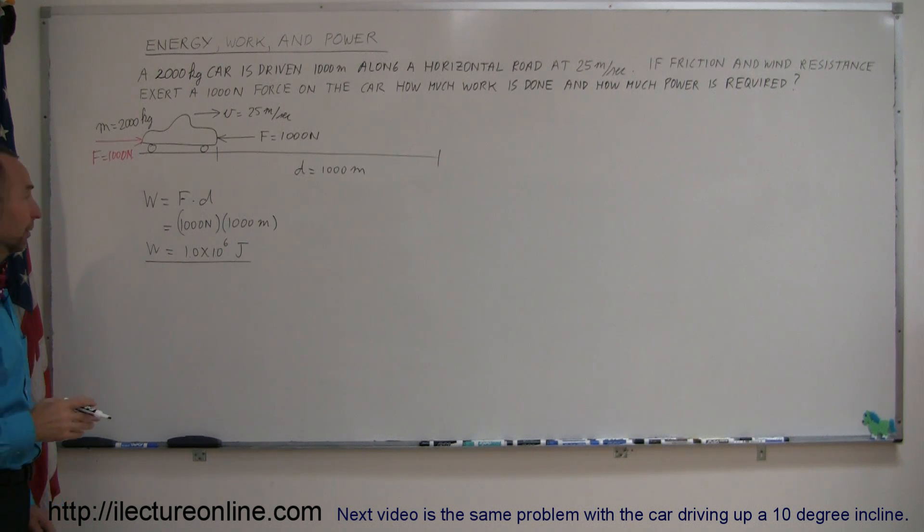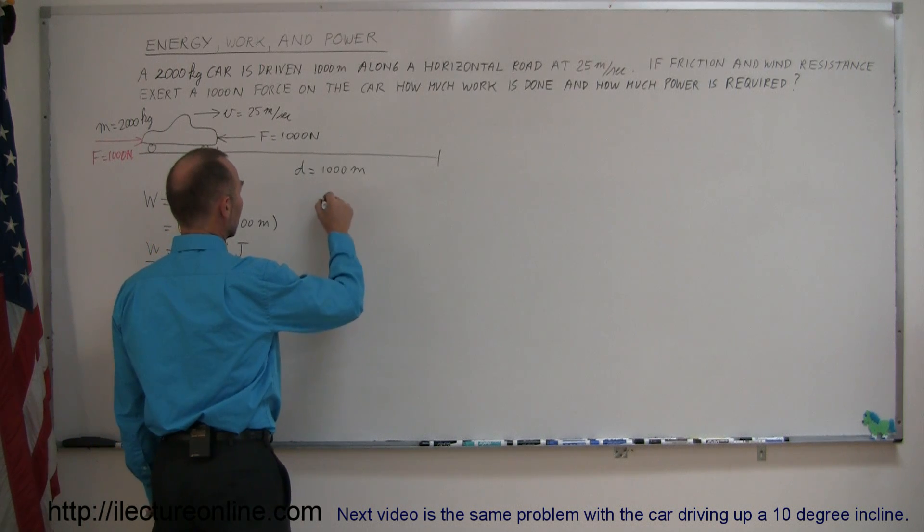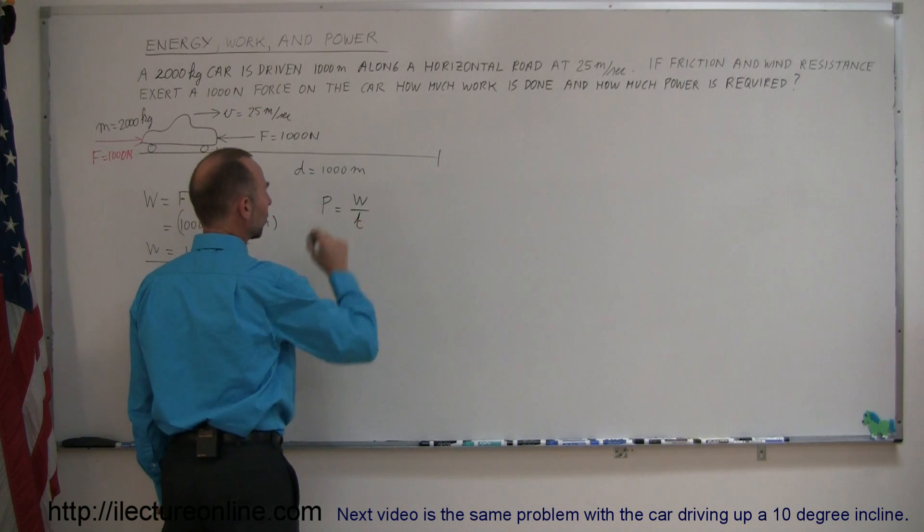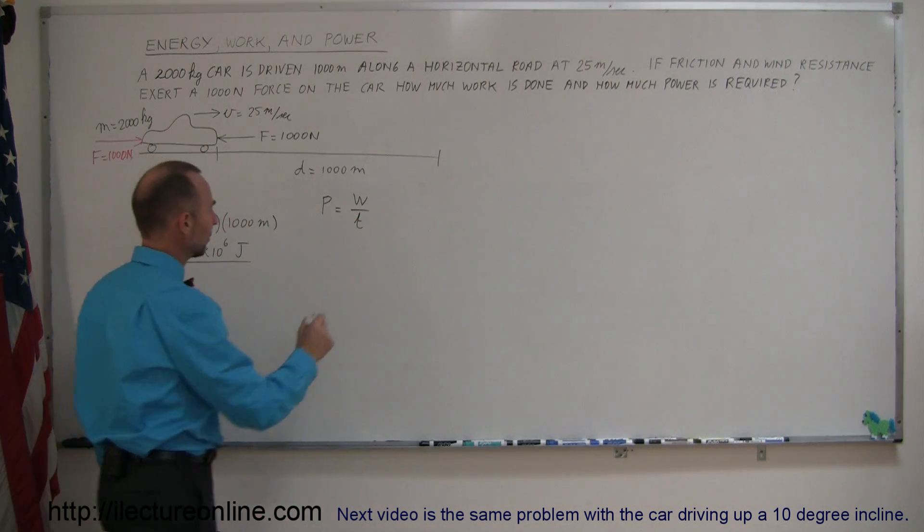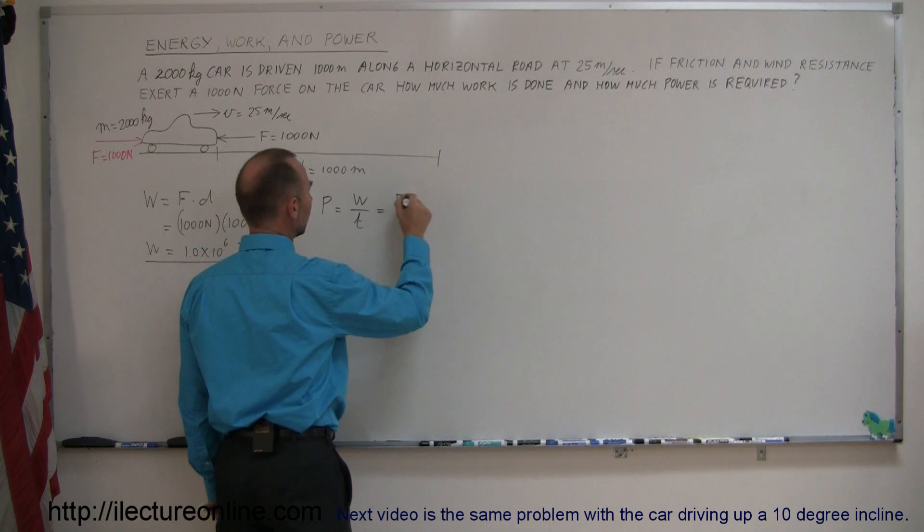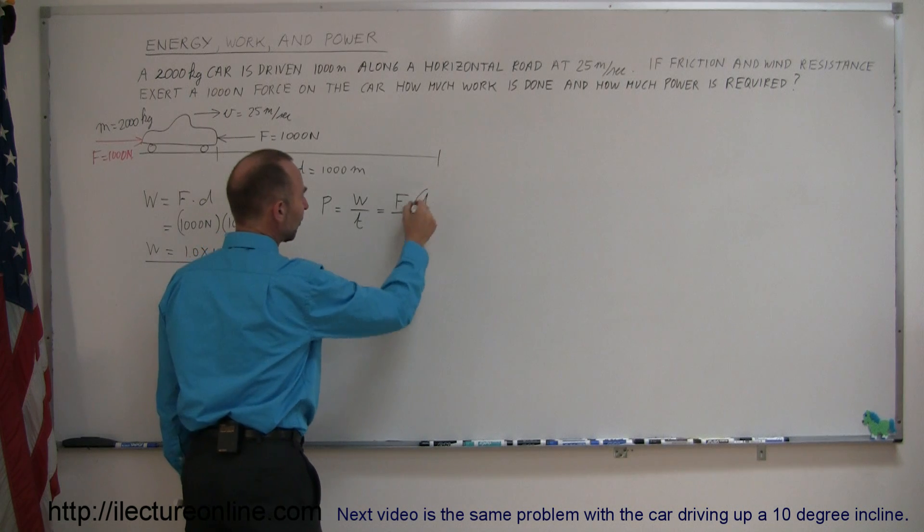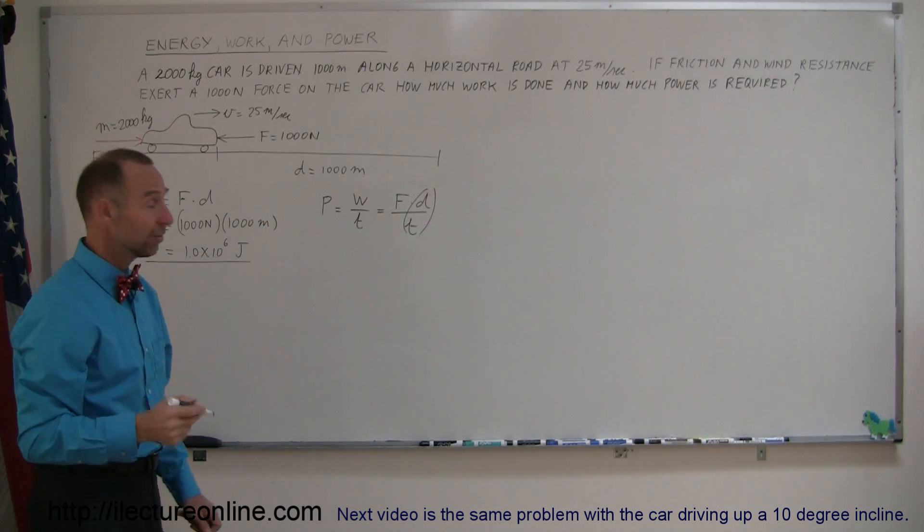How much power is required? Well, the definition of power is equal to work divided by time. How much work is done per unit time? And we know what the work is done. The work is force times distance, so it's force times distance divided by time. And distance divided by time, hmm, that sounds pretty familiar. That sounds like velocity.